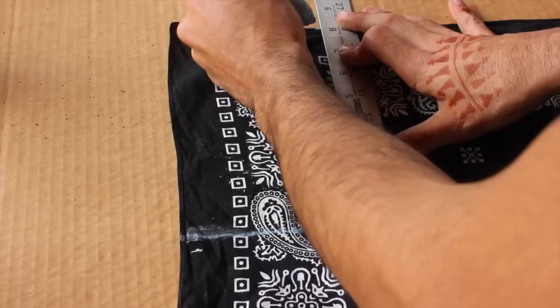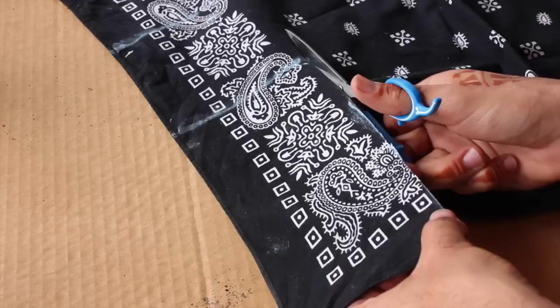Begin by measuring out two 4.5x8 panels, then chalk them up and cut them out.